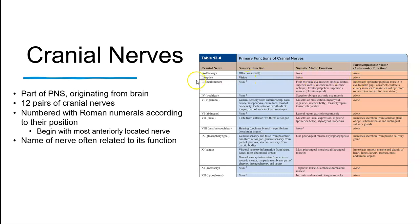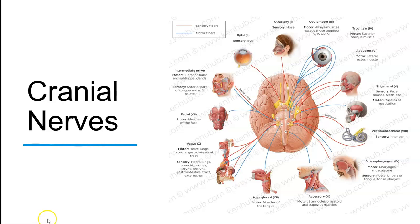Cranial nerve number two is your optic nerve — it is also just sensory and brings visual information to the brain. You can go through all 12, and what you should notice is that they are either sensory, motor, or both. Some will also have a little bit of autonomic nervous system function as well. This last slide shows another way of looking at those cranial nerves — here is the brain, here is the anterior aspect, so there is number one, olfactory, which is only sensory, and its sensory neurons come from the nose because that is our sense of smell.